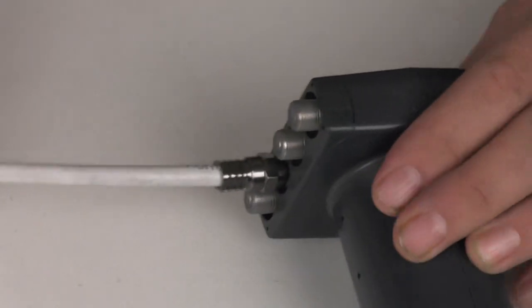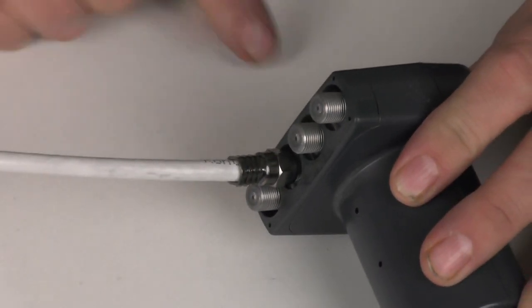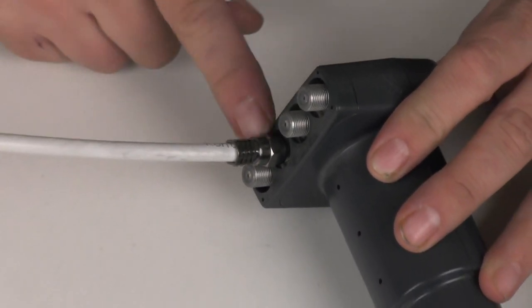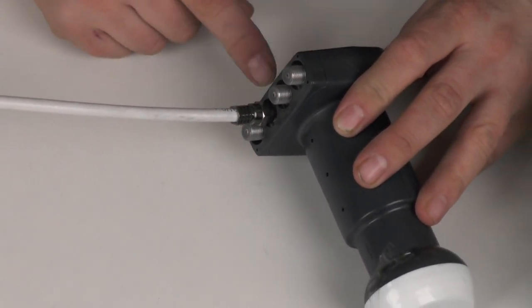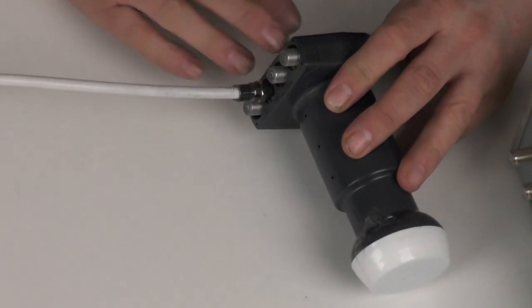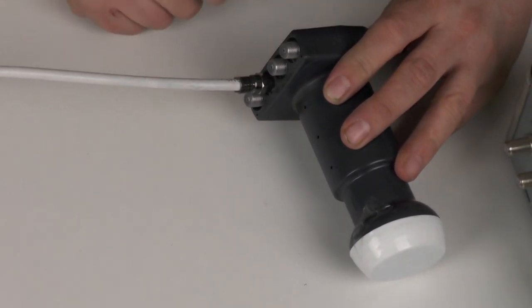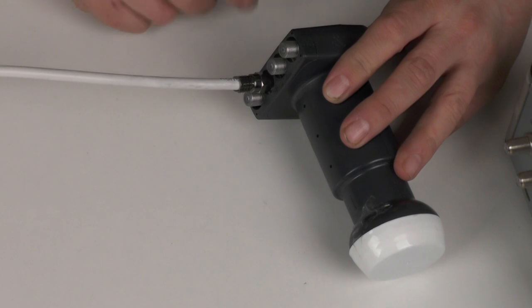It's very important to get a nice tight fitting F-Connector on an external connection because with the thread fully tightened like that, it reduces the risk of any water penetration.